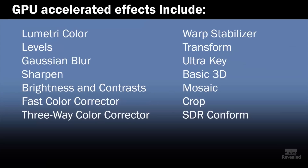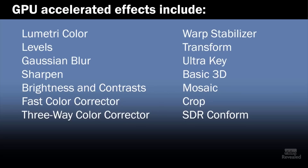So what is accelerated? These are the GPU-accelerated effects: things like the Lumetri color panel, Levels, Gaussian Blur, Sharpen, Brightness and Contrast, Fast Color Corrector, Three-Way Color Corrector, the Warp Stabilizer, and Transform — which is new. Transform is GPU accelerated, but not Skew. Scale and rotation are already GPU accelerated when they're in the effects panel. Transform is a separate way to do scale and rotation; if you're an After Effects user, you know sometimes you need your transform controls later in the effects path — that's what Transform is. It's now GPU accelerated. The Ultra Key Keyer, Basic 3D, Mosaic, Crop, and SDR Conform are all GPU accelerated.